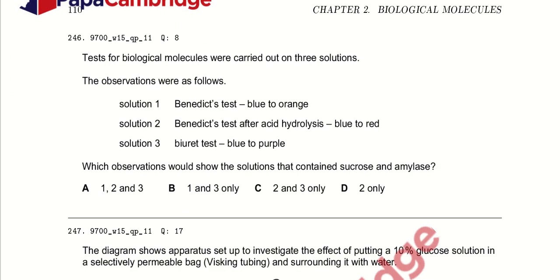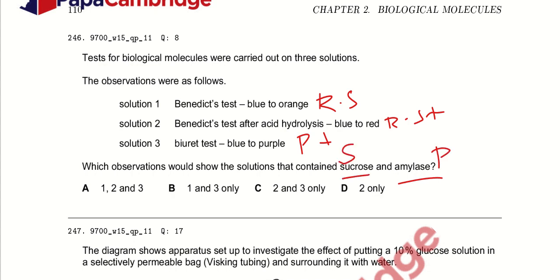Tests for biological molecules were carried out on three solutions. Solution 1: Benedict test gives blue to orange color — reducing sugars are present in low amount. Solution 2: Benedict test after acid hydrolysis gives blue to red — non-reducing sugars are present. Solution 3: Biuret test gives blue to purple color — proteins are present. Which observations show the solutions that contain sucrose and amylase? Amylase means protein and sucrose is a non-reducing sugar. So, options 2 and 3 are correct — sucrose gives red color with Benedict's solution after acid hydrolysis. Option C is the right answer.